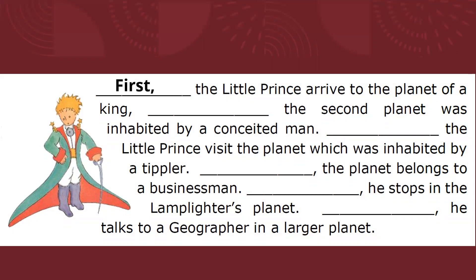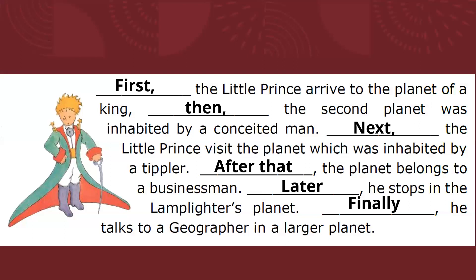First, the little prince arrived to the planet of a king. Then, the second planet was inhabited by a conceited man. Next, the little prince visits the planet which was inhabited by a tipler. After that, the planet belongs to a businessman. Later, he stops in the lamp lighter's planet. And finally, he talks to a geographer in a larger planet.